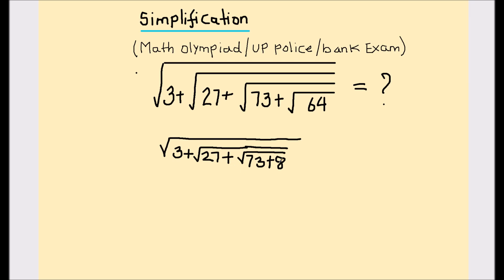Now we have 73 plus 8 in the innermost square root, so first we will solve that. This becomes √(3+√(27+81)), because 73 plus 8 is 81.